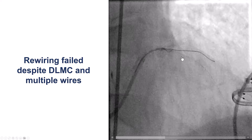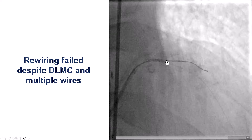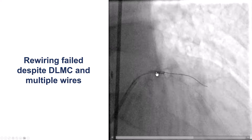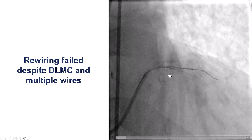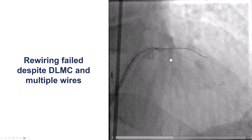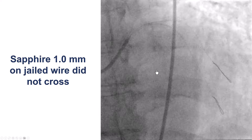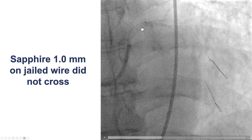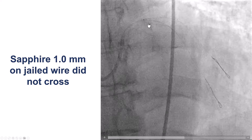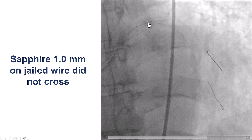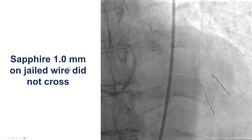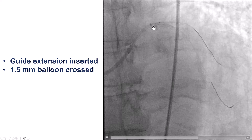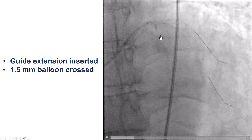Our next step was to rewire the diagonal branch and do a kissing balloon inflation to see if that would improve the flow. However, it proved very difficult to advance a guidewire. We used a Sasuke dual-lumen microcatheter, but even with that we were unable to advance several wires, including workhorse wires and the Sion Black. After multiple attempts, we decided to pre-dilate over the jailed wire to get more flow into the diagonal branch, and then tried again to rewire with the dual-lumen microcatheter, but even a Sapphire 1.0 would not cross. So we used a guide extension, and this time a 1.5 mm Takeru balloon successfully crossed into the diagonal branch and pre-dilated.